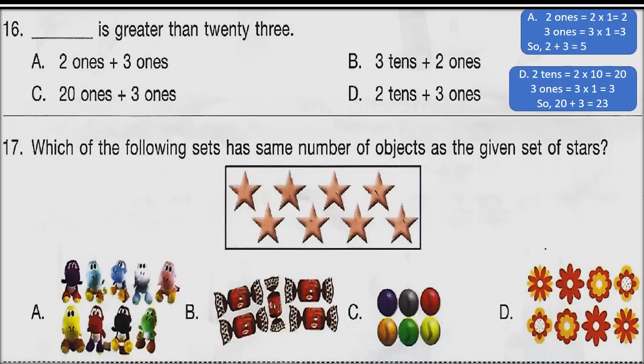Question 17: Which of the following sets has the same number of objects as the given set of stars? Count the number of stars and choose which option has the same number of objects.